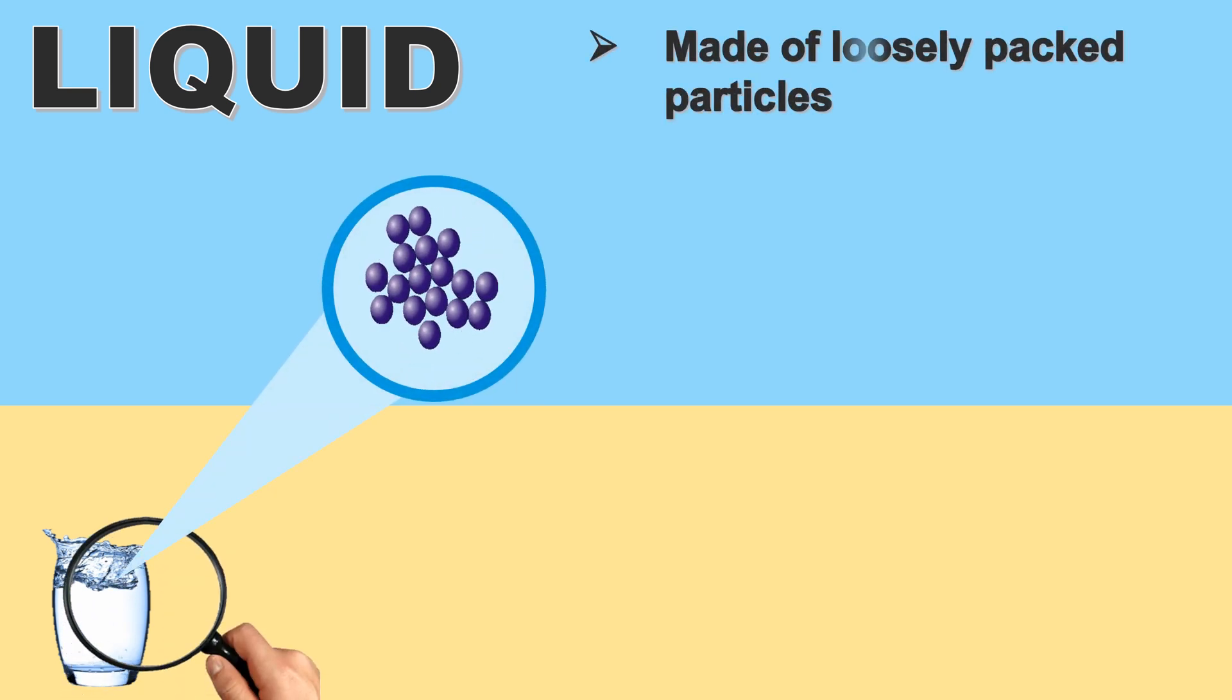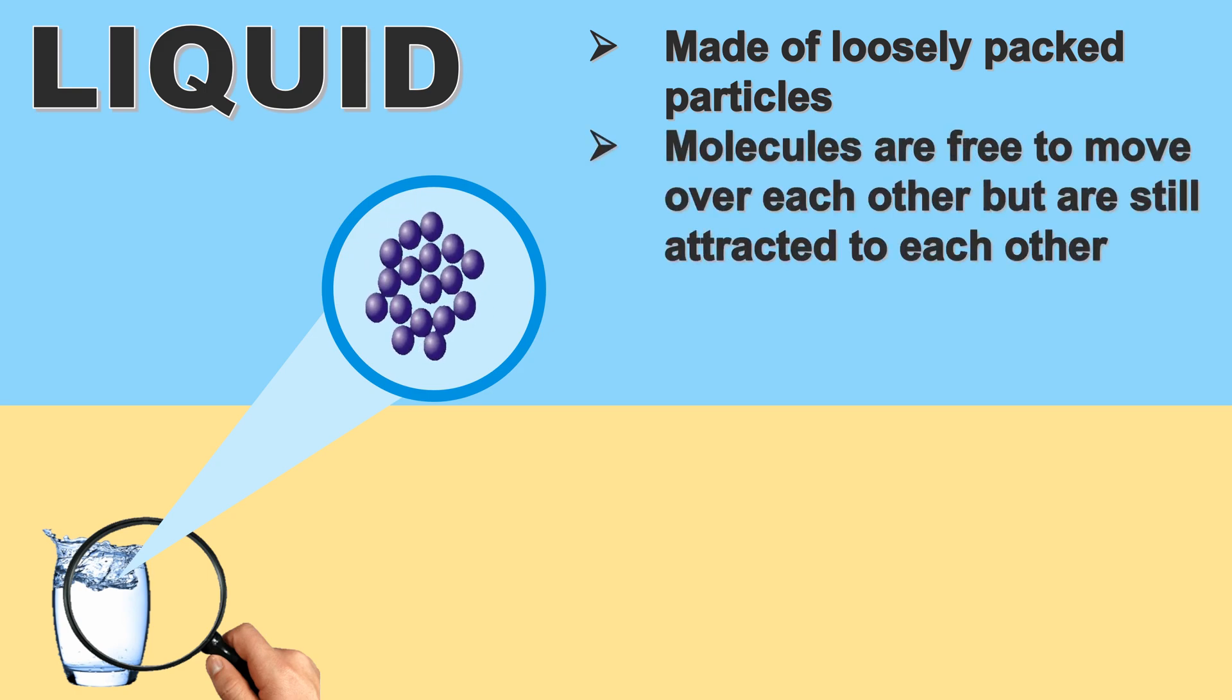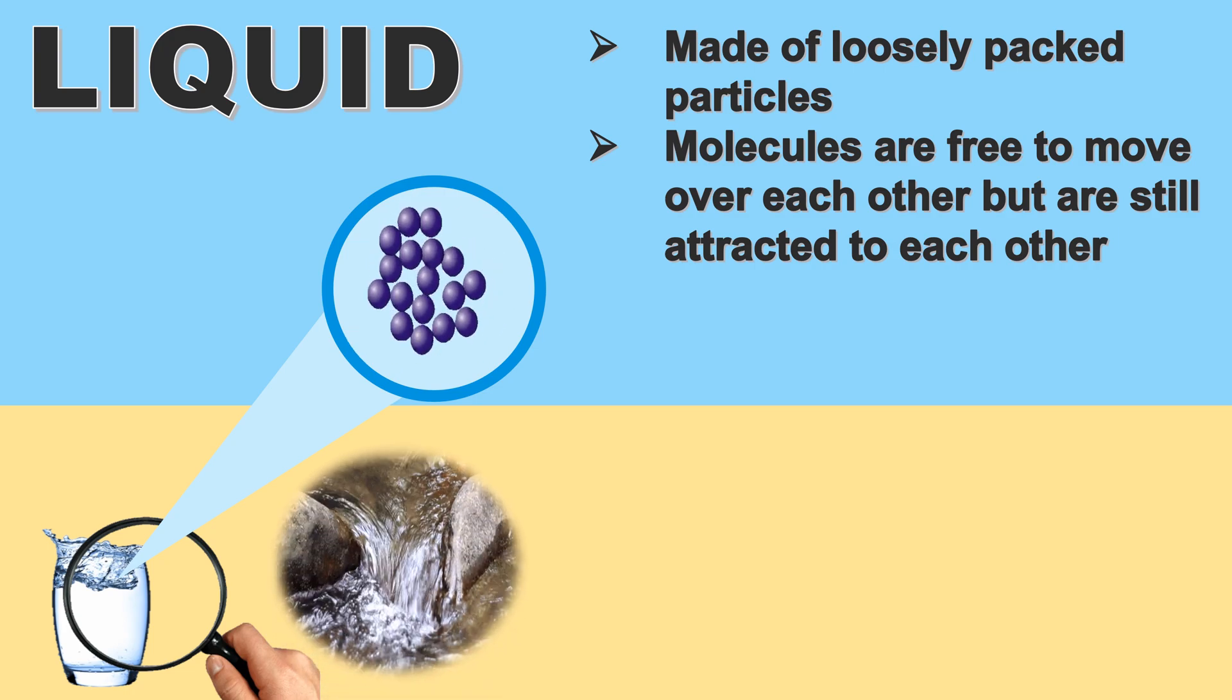Let's describe liquid. Water is a liquid. Liquid is made up of loosely packed particles and have spaces in between. Molecules are free to move over each other but are still attracted to each other. That's the reason why liquid has the ability to flow.